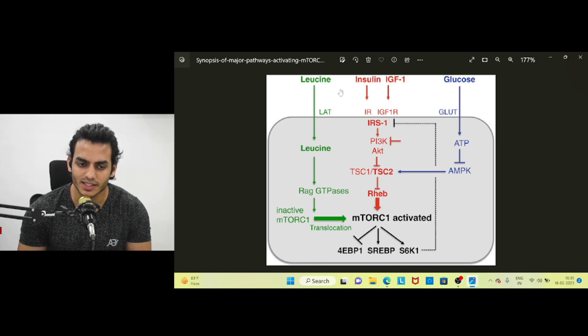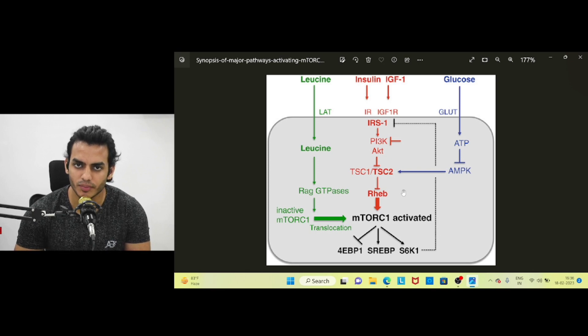Cancer develops only when mTORC1 is chronically activated, and that too when you have genetic mutations. That's the main thing. Also, if you do exercise you raise your blood pressure, which is a short-term stressor that can be helpful for you.